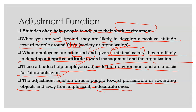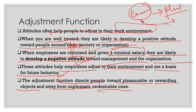So the adjustment function directs people towards pleasurable or rewarding objects and asks you to stay away from unpleasant and undesirable ones. First you assess an environment — if you find it pleasant, you get pushed toward that environment or person. If the environment is not pleasurable or is undesirable, you try to stay away. That is what the first function is all about.